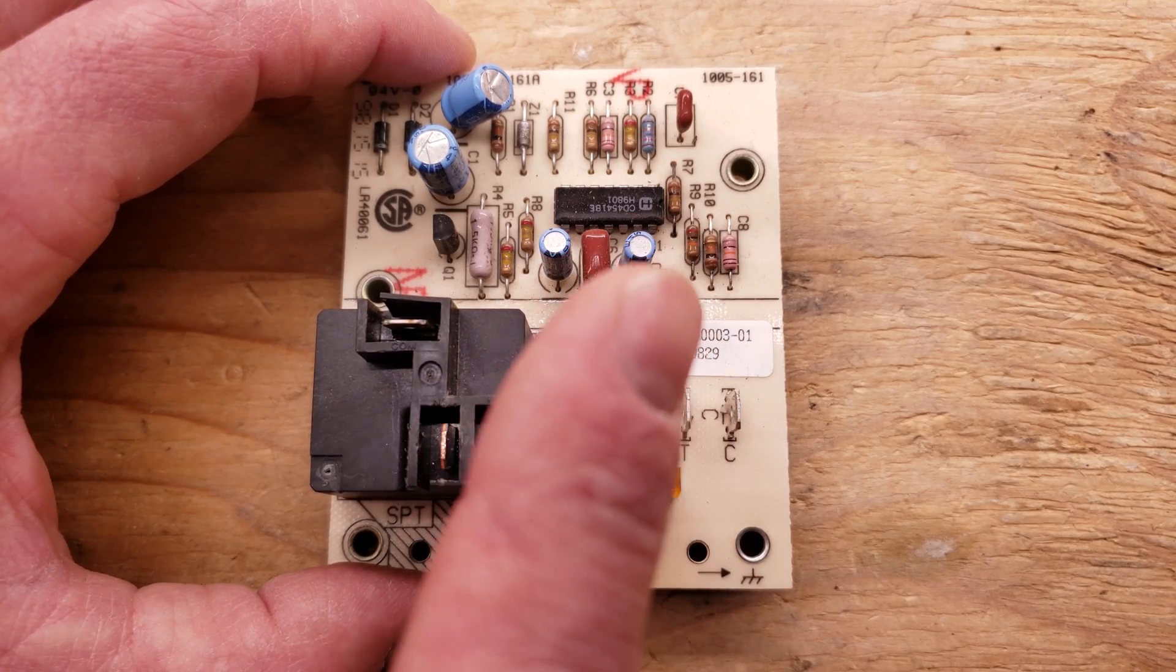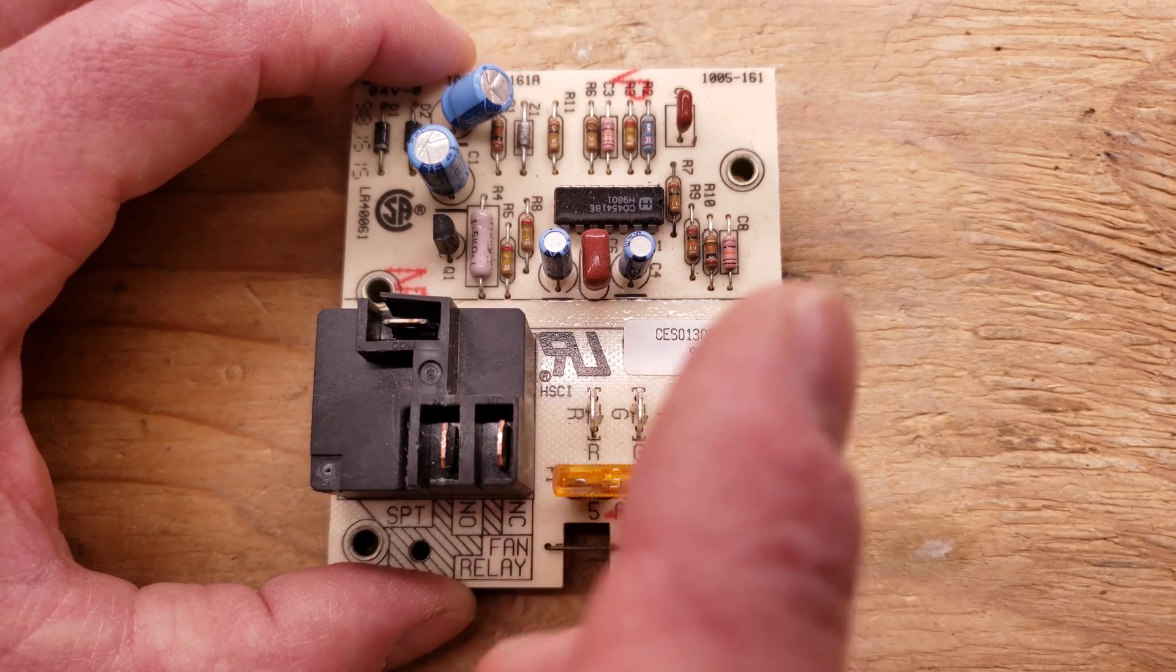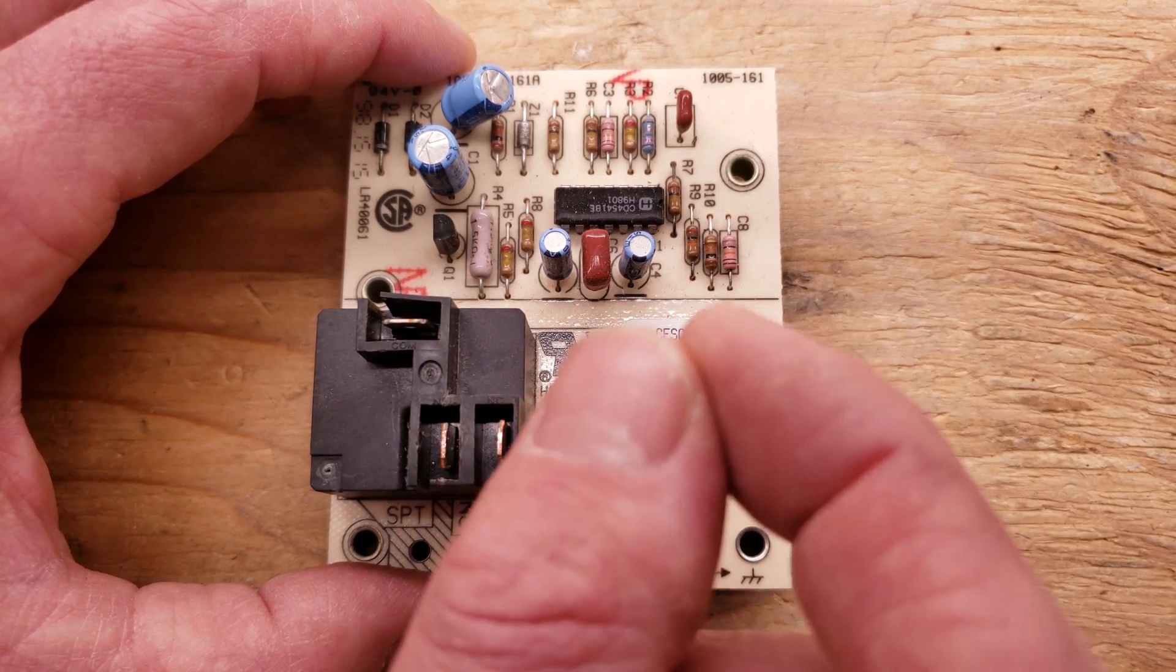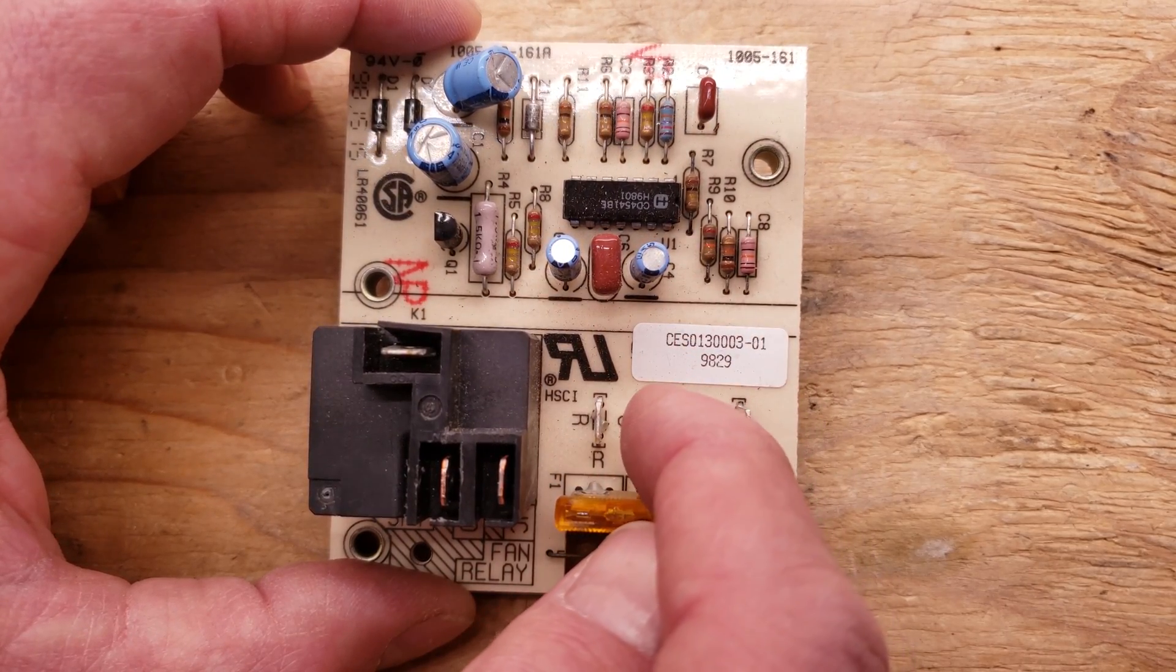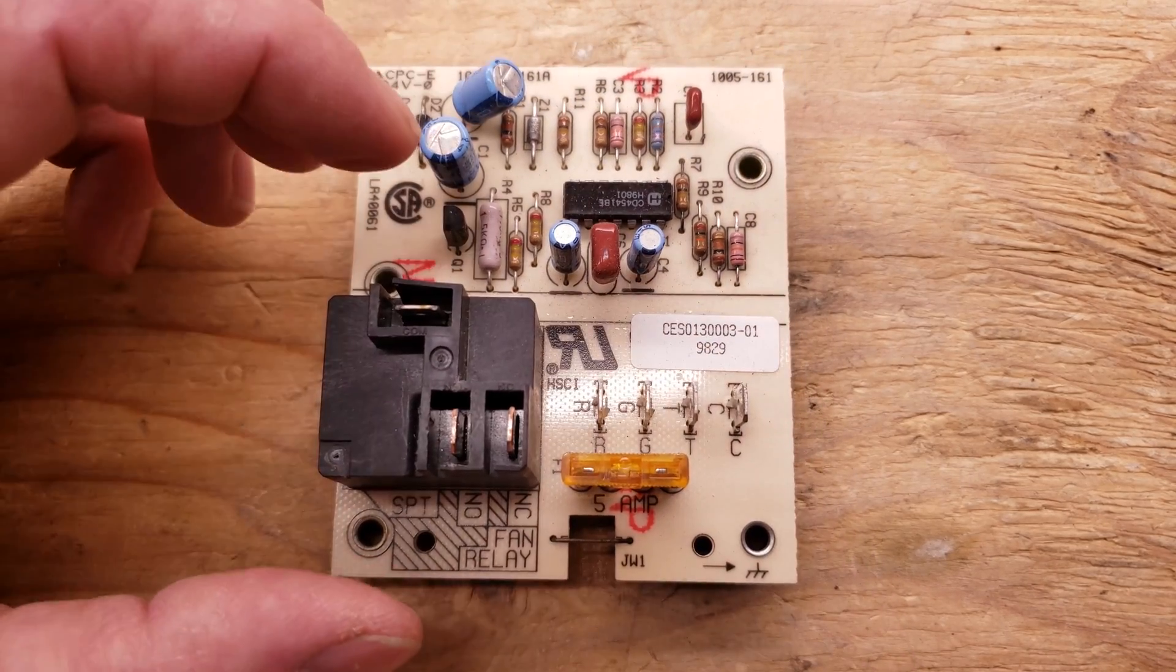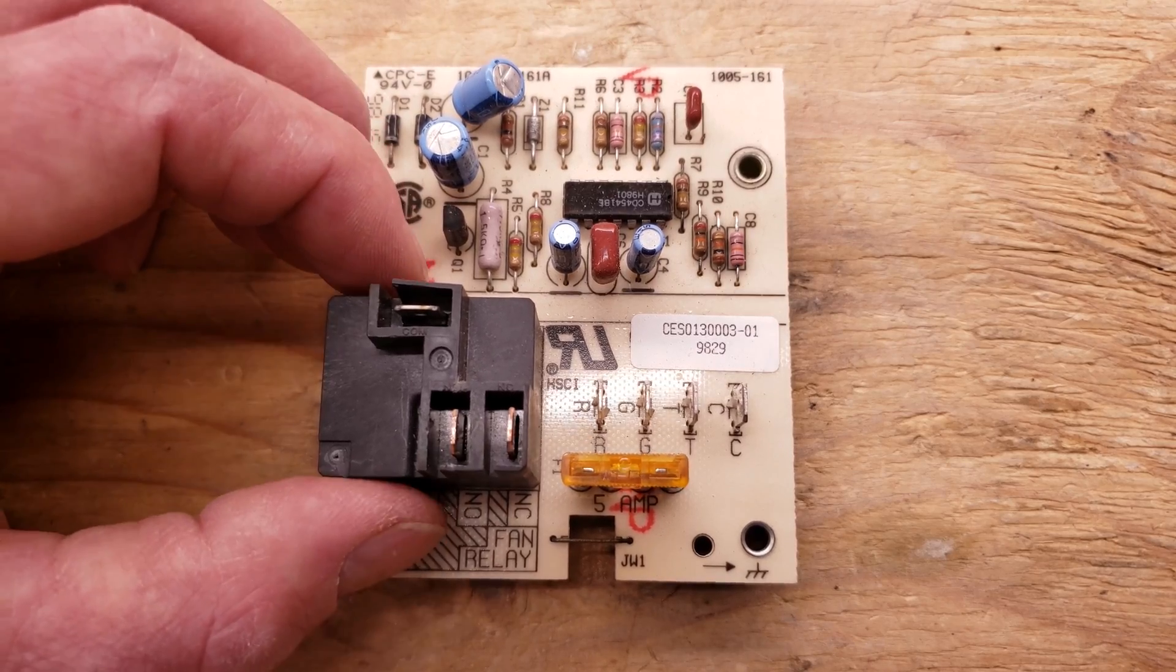Then in the thermostat, when you turn the fan on, R touches G. It sends 24 volts from the thermostat back over to the G terminal, and that's going to control this block right here, which is actually a relay.